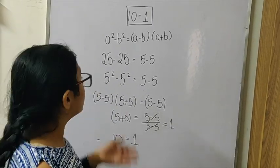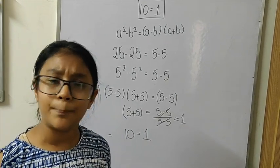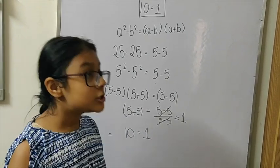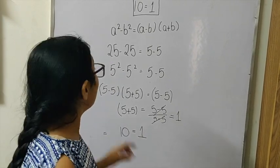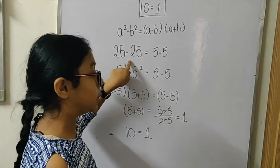Such a funny thing, right? Just because of a simple equation you can prove that 10 or many numbers can be equal to 1. Not only 10, you can also prove that 12 is equal to 1 by changing 25 with 36 and 5 with its root, that is 6.